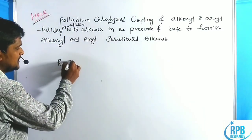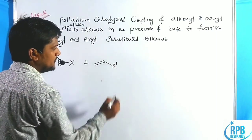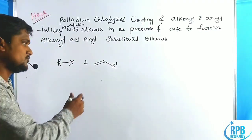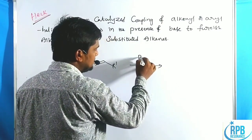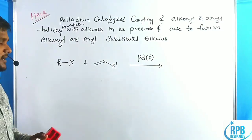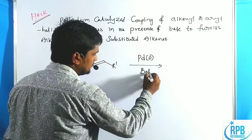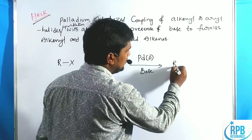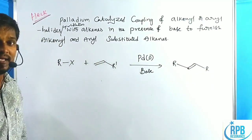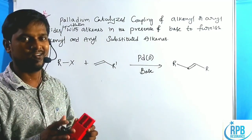The general representation involves alkyl halides or triflates treated with alkenes in the presence of palladium catalyst. Palladium(0) is the most stable catalyst, used along with a base. This furnishes a new C-C single bond between the alkene and the alkyl halide carbon group. This is the simplest representation of the Heck cross-coupling reaction.